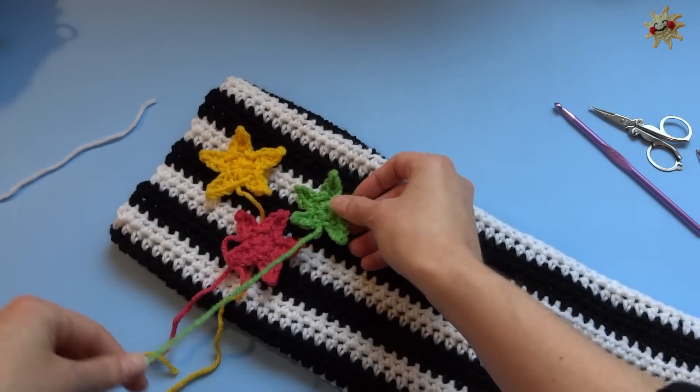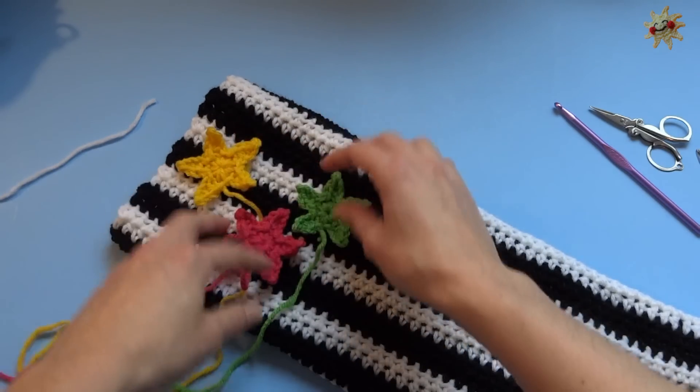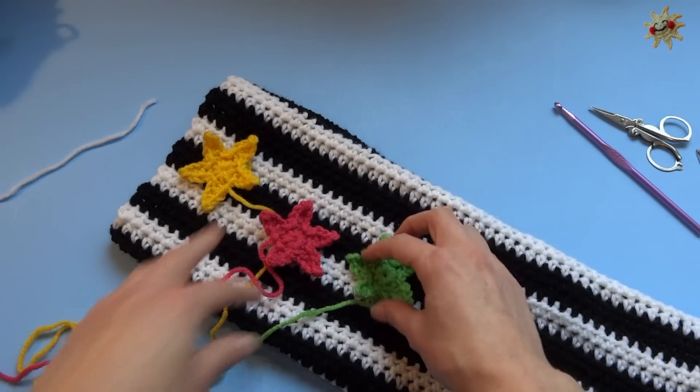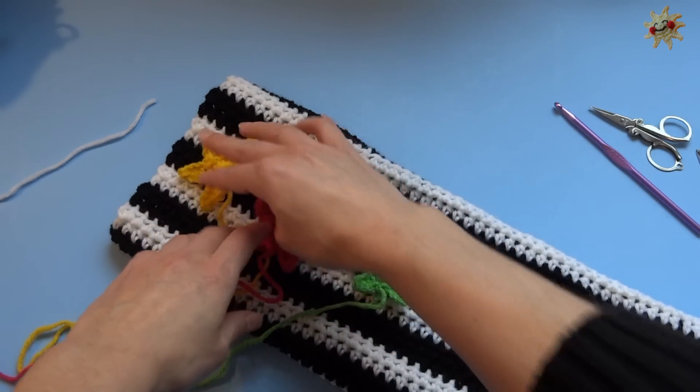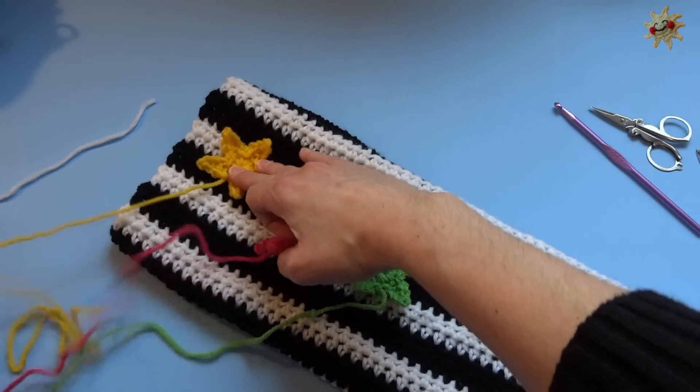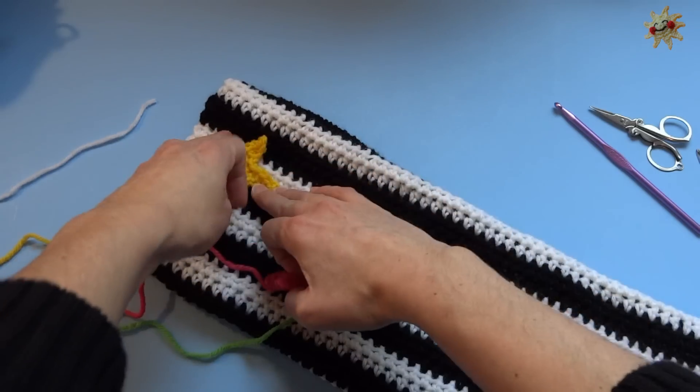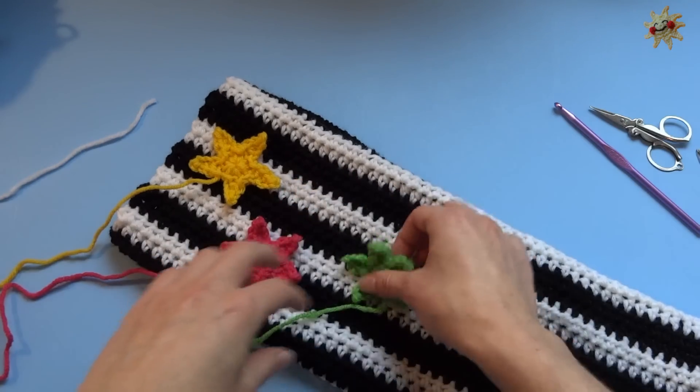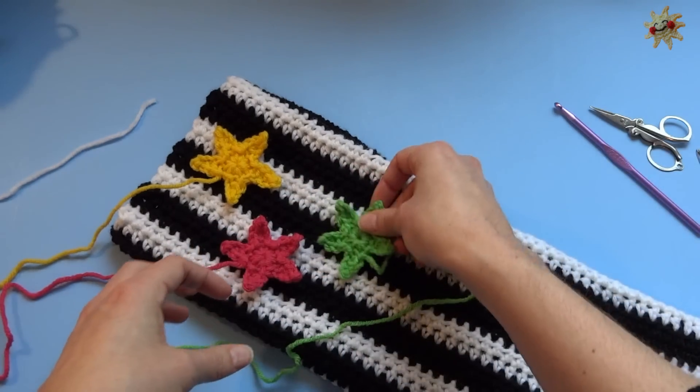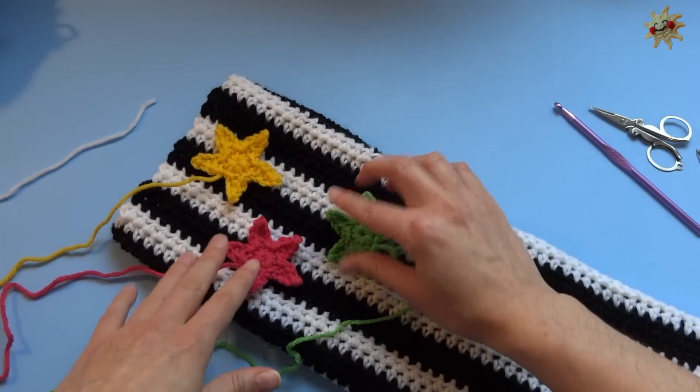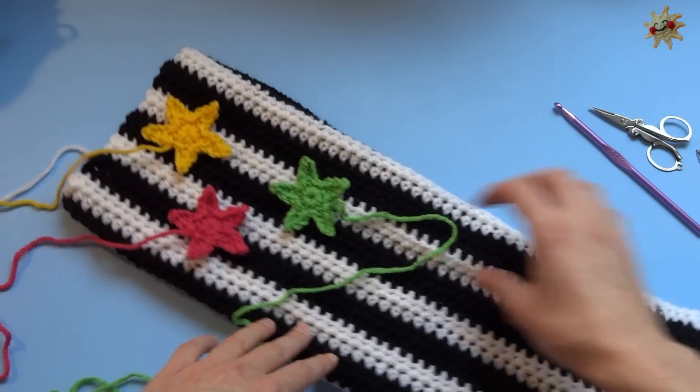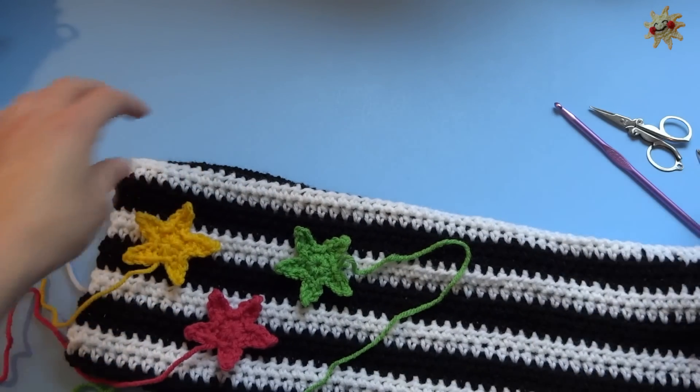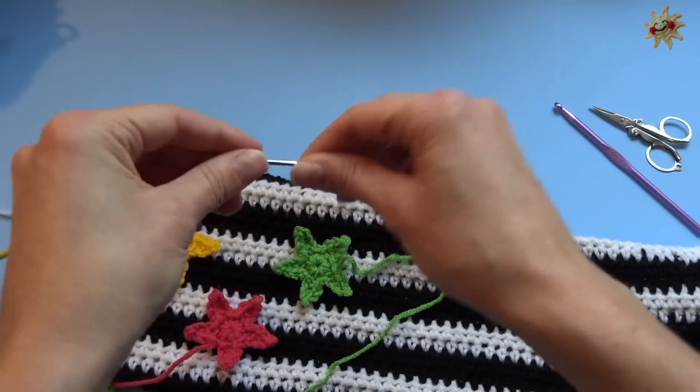And what I'm going to do is just sort of decide how I want these running up the side of my leg warmer, keeping in mind that I might scrunch it a little bit. So I'm going to keep them fairly close to the top, but I'm going to stagger them in a row. And I'm just going to lay them out like that. And once I think I've got a thing that I like, I will start by sewing them on.